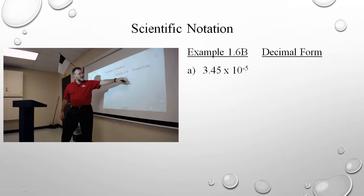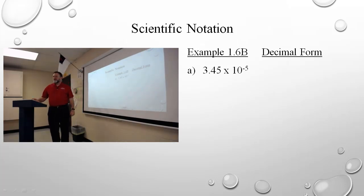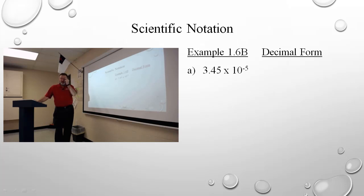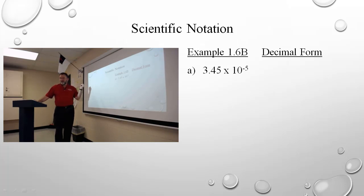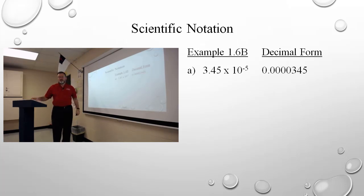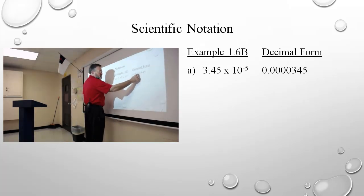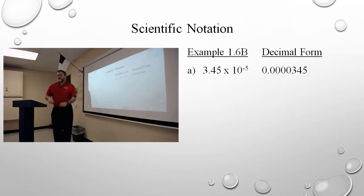I have to move it by interpreting what the negative times ten to the negative fifth means. The negative means in decimal form the decimal has to move to the left. Because I'm ultimately writing it in times ten to the zero — that's what decimal form is. Think of it as times ten to the zero. So since I'm going from negative five to zero, I'm making it bigger — I've got to make my number smaller, and I make my number smaller by moving the decimal to the left. So I'm going to write 3.45 and then move the decimal to the left five places. You have to have a leading zero. That lets me know that it's less than one.